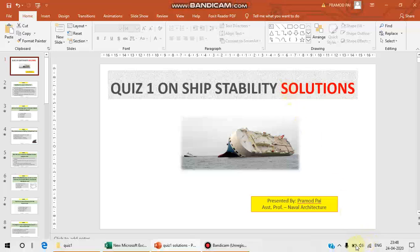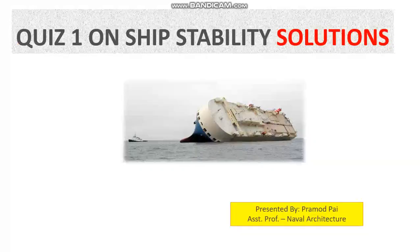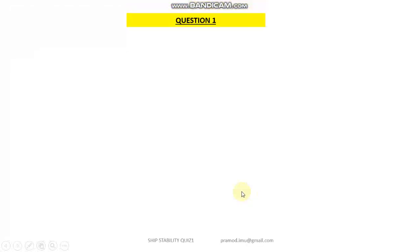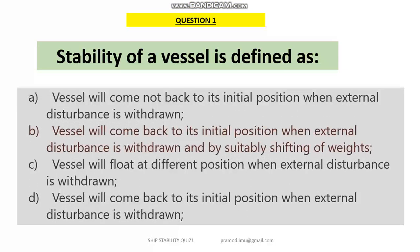Hello and welcome to the solutions of quiz 1. Let us see one by one the questions and their solutions. Starting with question 1: the stability of a vessel is defined as option B — a vessel will come back to its initial position when all external disturbances are removed or by suitable shifting of mass. This is what we actually study in the subject of ship's stability.